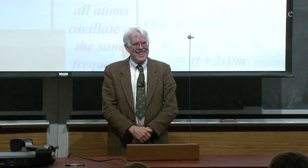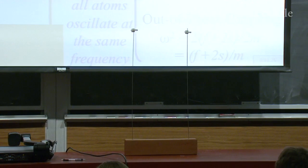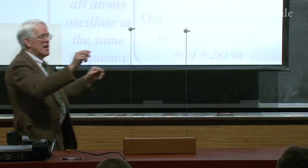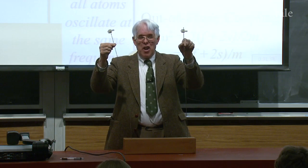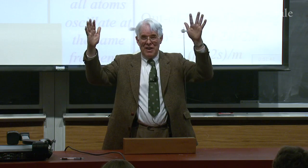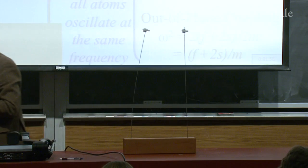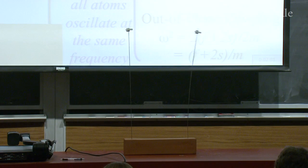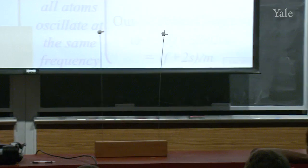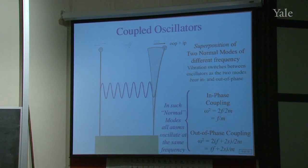The vibration goes back and forth between one oscillator vibrating and the other vibrating. This happens because the two normal modes have different frequencies, so they get in-step and then out-of-step with one another. When they're in-step, this one is moving as we started it; when it's one minus the other, it's the other oscillator moving. Because they have different frequencies, they cycle in and out of phase with one another — this is exactly what we saw with 1s and 2p orbitals!